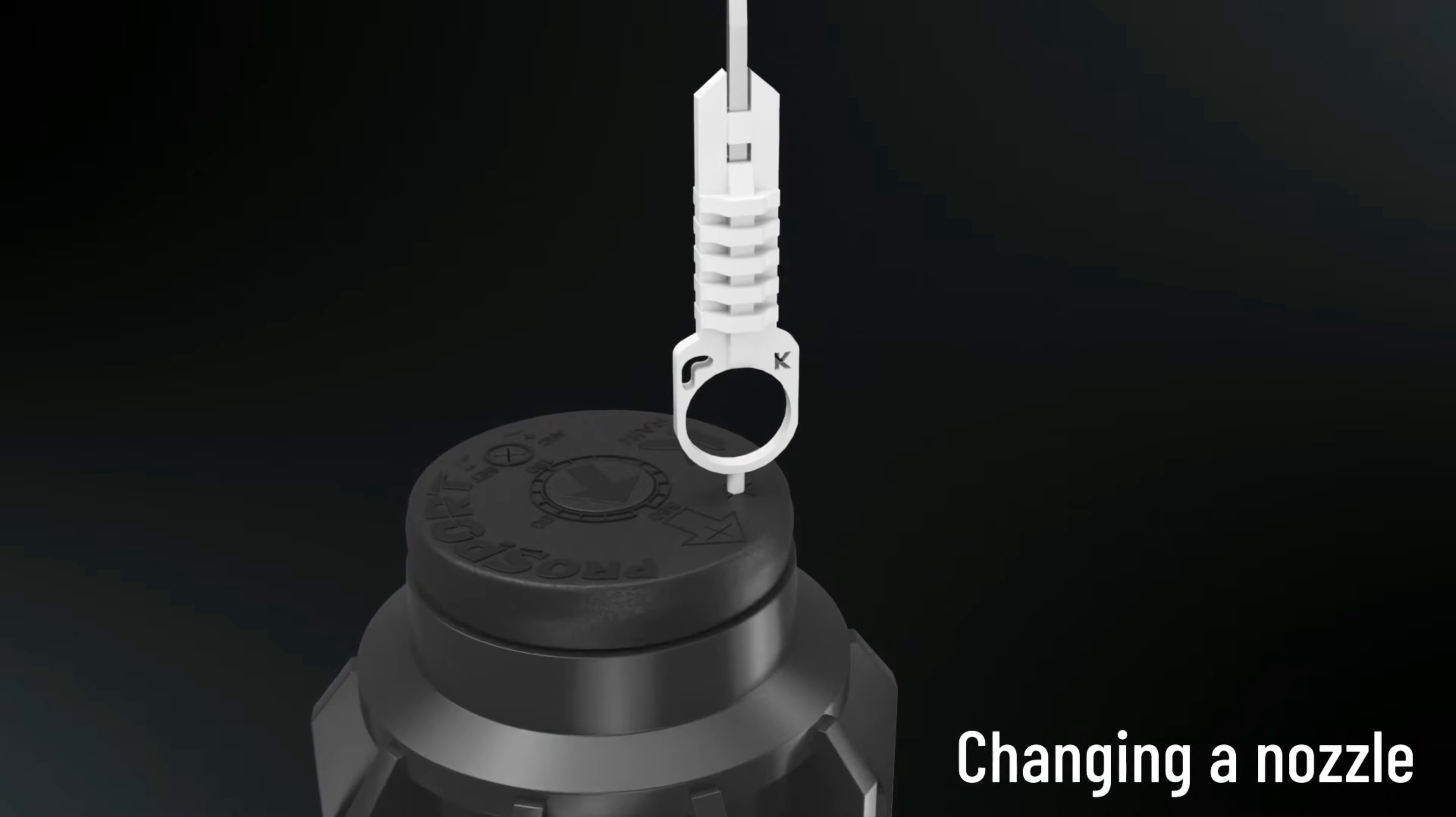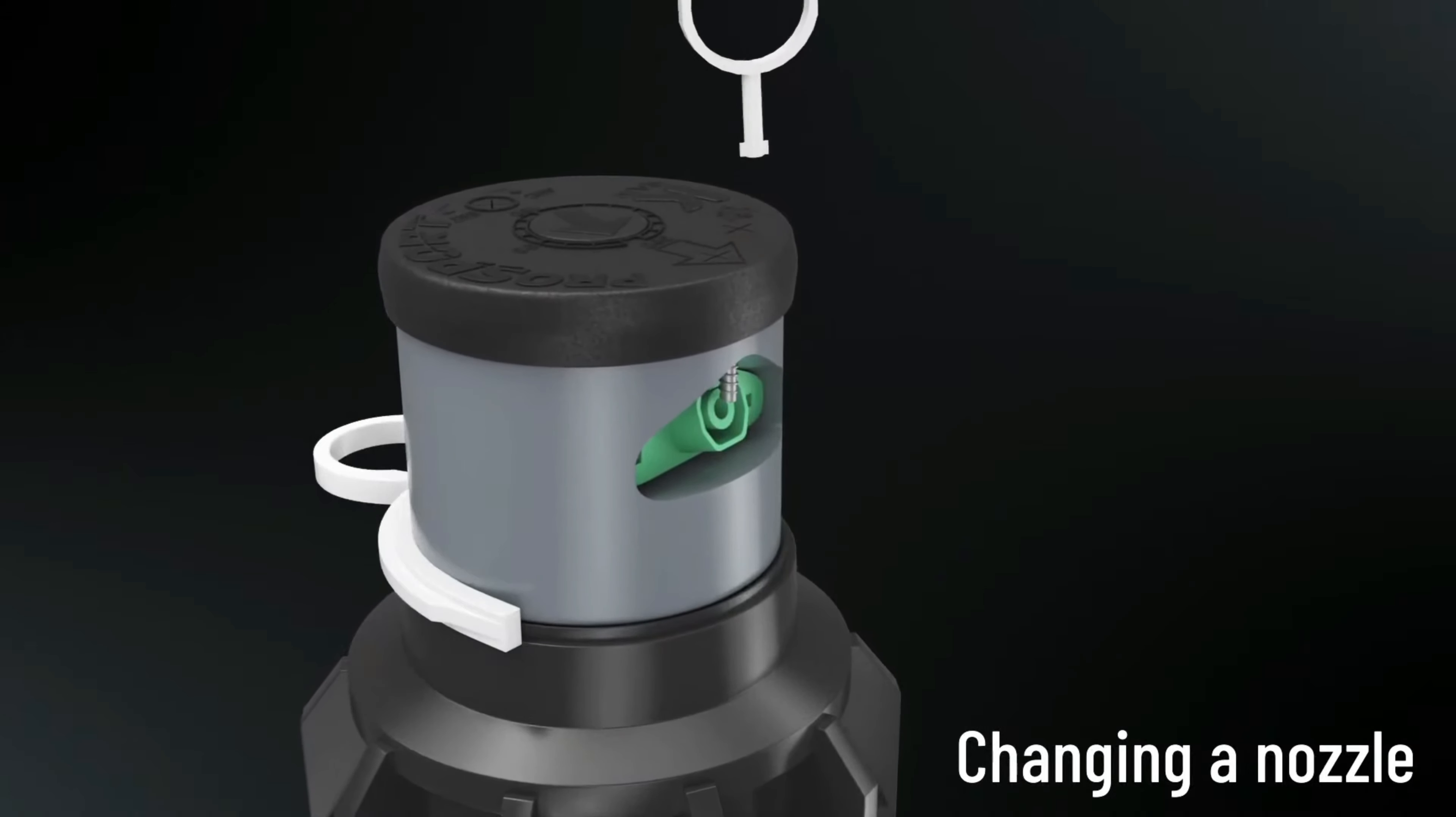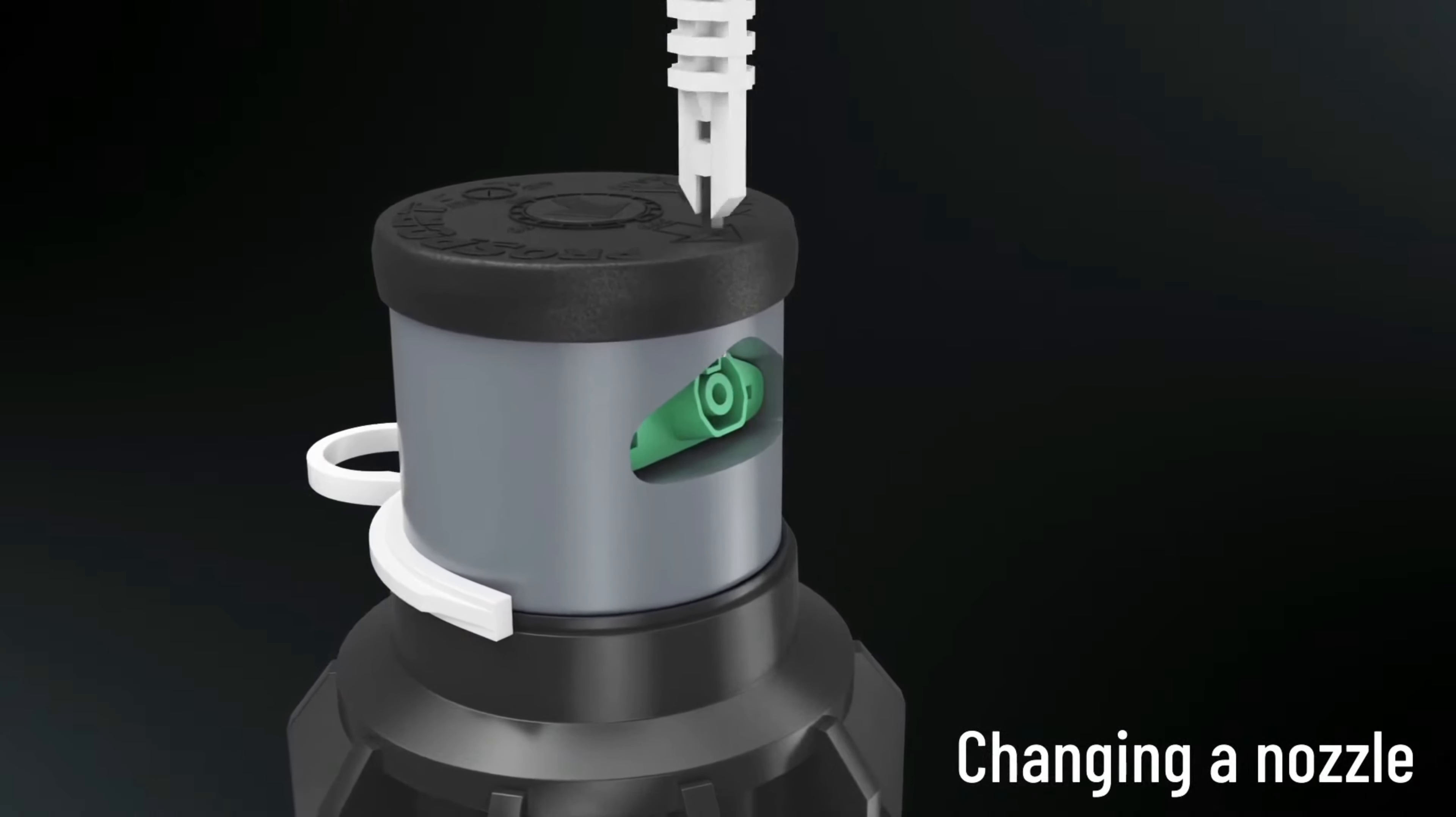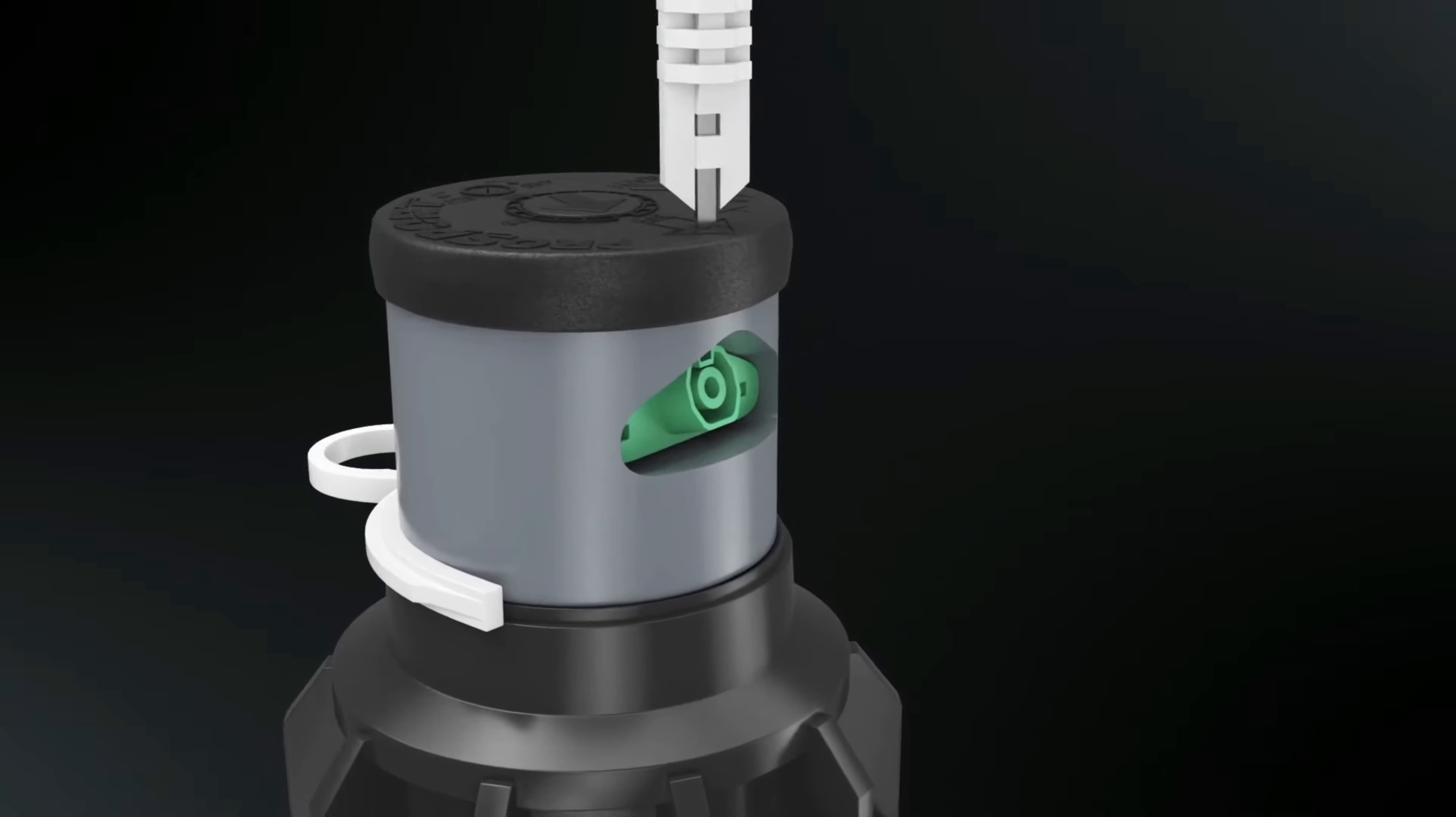Firmly pull up the entire spring-loaded riser to access the nozzle socket. Attach the riser clip to keep it in the popped-up position. Using the flat metal end of the key, loosen the nozzle retention screw by turning counterclockwise. Do not remove the screw.